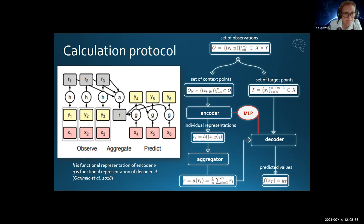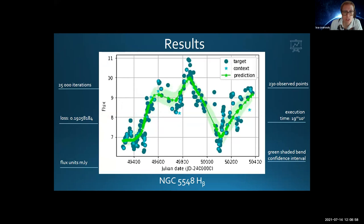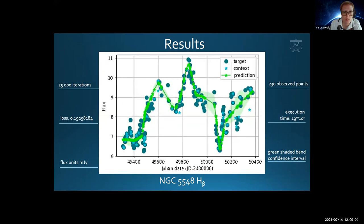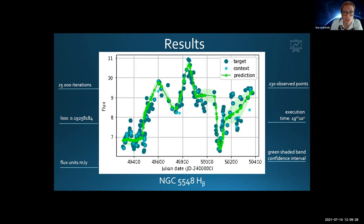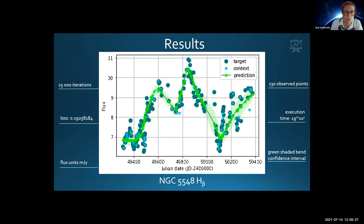Here are some results. This animation shows an example of the learning process — training for NGC 5548 H-beta light curve, trained with 25,000 iterations. Dark blue dots are actual measured values of flux, which are our context points. Light green dots represent predicted values at target points, and the light green shaded band is the confidence interval, which reduces after each iteration step. We can see how after every 1,000 iterations, the conditional neural process becomes more accurate in modeling our data.